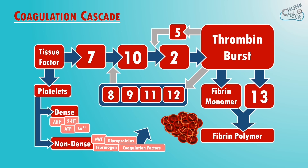Counteracting this there are natural anticoagulants as well as some drugs which combat clotting. Protein S acts as a cofactor for protein C, which is activated by thrombin and thrombomodulin on the endothelial cell surface. The body knows that we don't want a clot to last forever, so these proteins are waiting in the wings ready to go. Protein C inactivates factor 5 and factor 8 to slow down the clotting process.